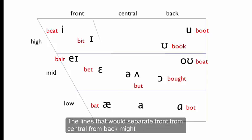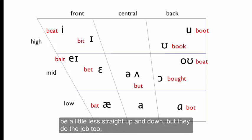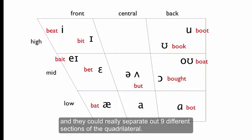The lines that would separate front from central from back might be a little less straight up and down, but they do the job too. And they could really separate out nine different sections of the quadrilateral.